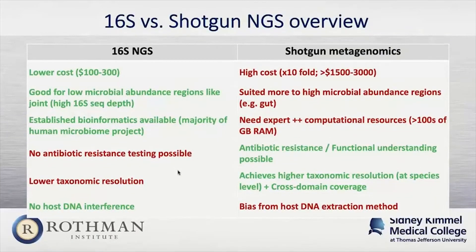Why would you use one method over another? 16S-targeted sequencing was chosen at Microgen as it's lower cost, good for lower microbial abundance regions such as the prosthetic joint, and has established bioinformatic pipelines available. A majority of the human microbiome project was done with this methodology, and by targeting the 16S region, you largely avoid issues with host DNA interference. The trade-off is that shotgun methodology gives better taxonomic resolution at the species level and also enables antibiotic resistance and functional understanding, which is not possible with 16S sequencing.